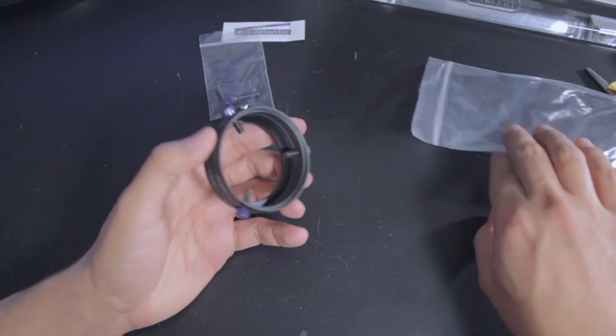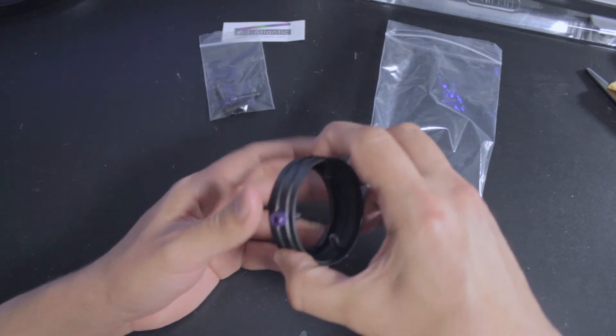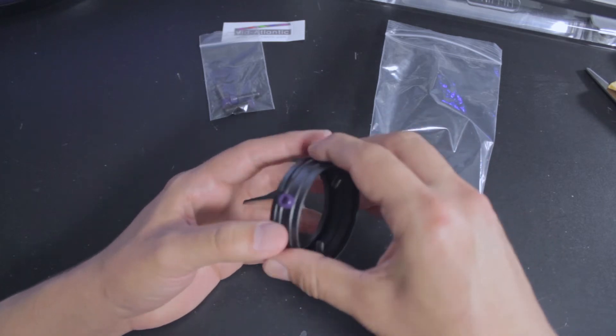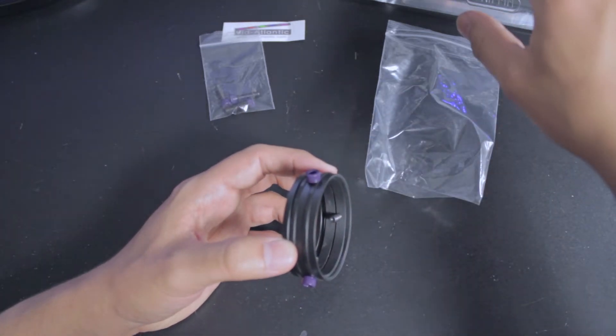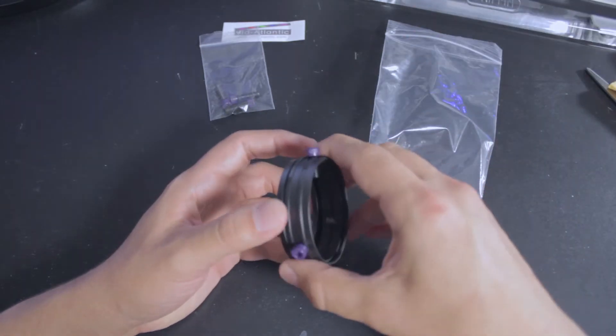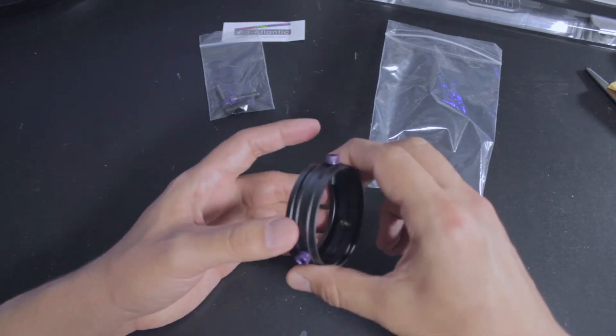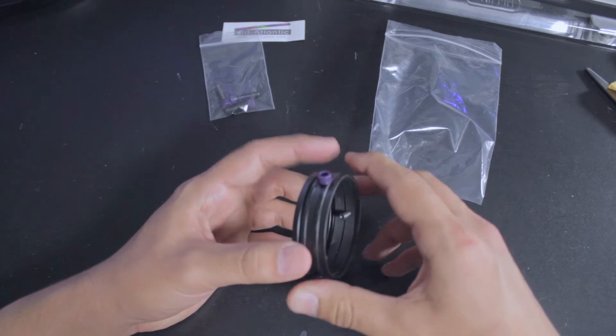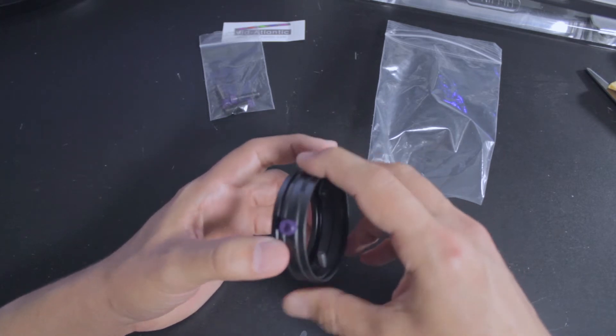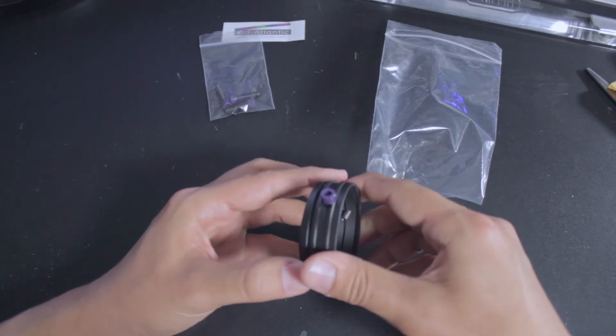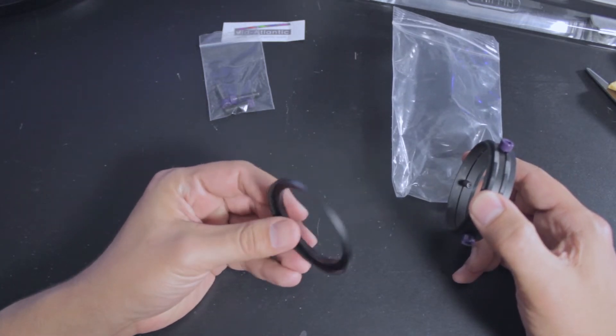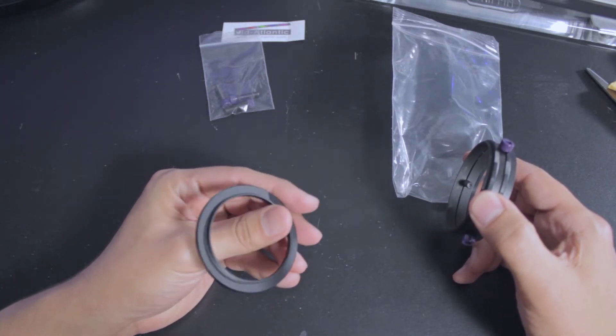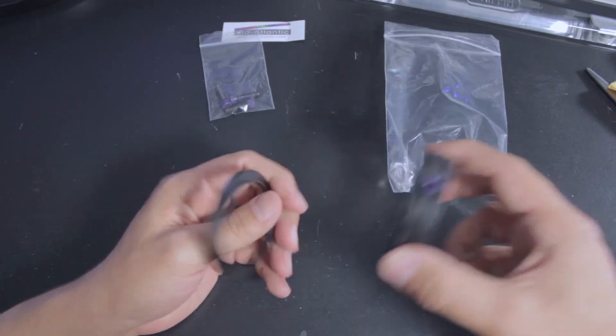This cost me $39 on eBay with free shipping. On their website I believe it's $41 or $42, but on the website you can choose two size rings. There's a 70 millimeter and the 60 millimeter and the 52 step-down ring. I believe they have more sizes, just not sure which ones off hand.